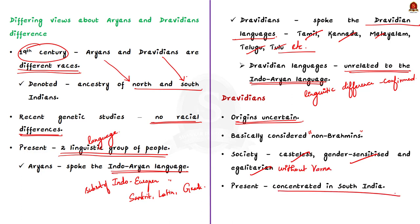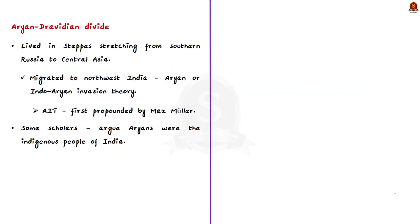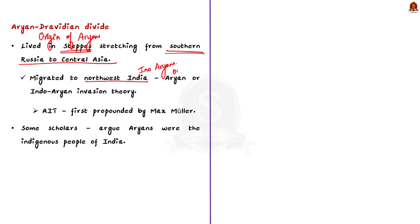The Aryan-Dravidian divide came into existence because of three crucial assumptions. The first is regarding the origins of Aryans. Some historians believe Aryans originally lived in steppes stretching from Southern Russia to Central Asia, and a group of them migrated to North-West India - coming to be called Indo-Aryans or Aryans. This led to them being called outsiders who came to India. This is called the Indo-Aryan invasion theory, first propounded by Max Muller. However, other scholars argue that Aryans were the indigenous people of India and did not come from outside.